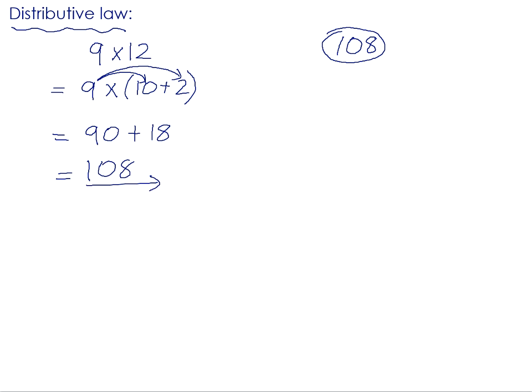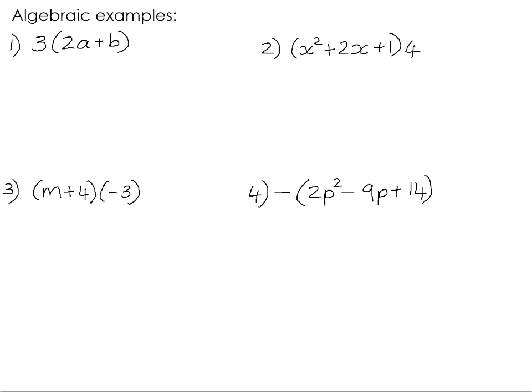So if we have a look at some algebraic examples where this becomes especially useful because we are unable to add unlike terms in an algebraic expression. So in number 1, in the bracket we have 2a plus b. We're unable to add those, they're unlike terms.